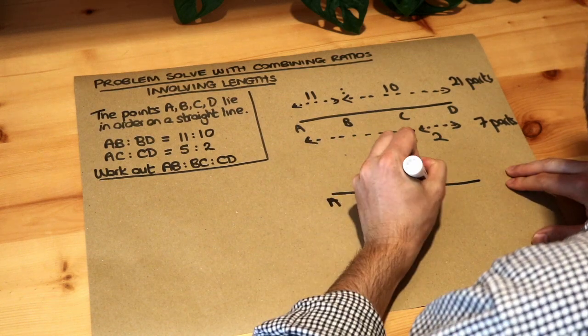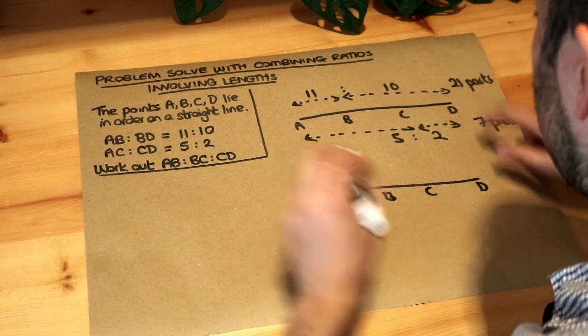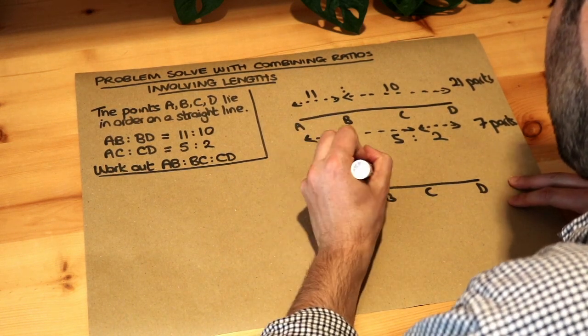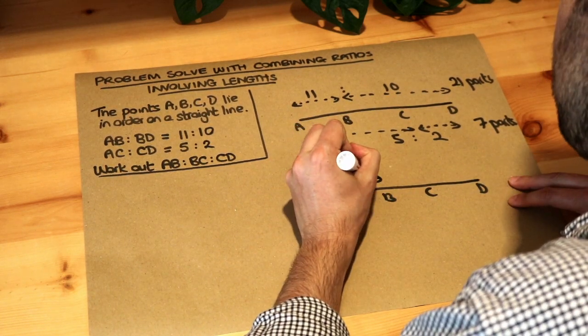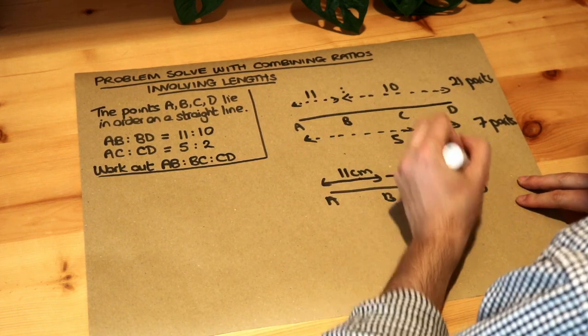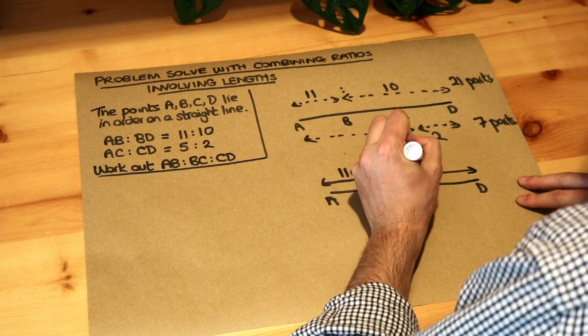So we've got A, B, C, D. That's 21 parts, so we'll keep that as it is. A to B is 11 - we can call it 11 centimeters at this stage, but we could just say 11. The unit doesn't matter. B to D is 10, so we're going to call it 10 centimeters.